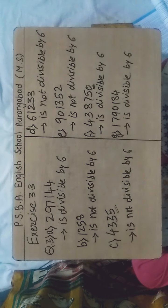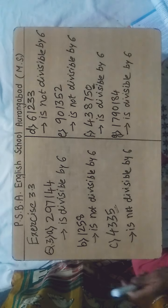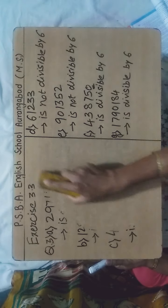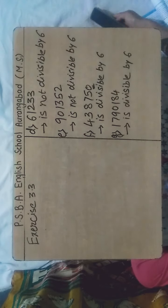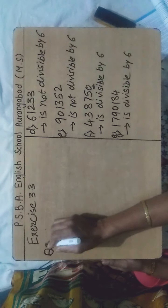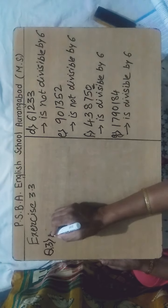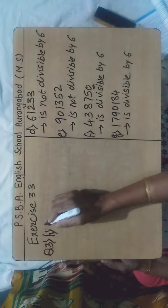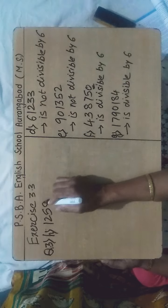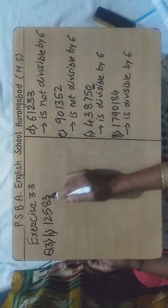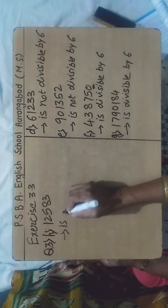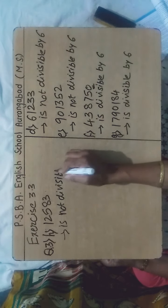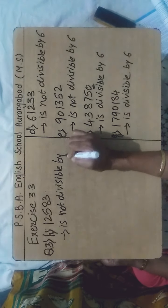Up to G we have finished. Now H, I, and J I will solve here. Sub-question H: the number given to us is 12,583. It is having 3 at its ones place, so it is not divisible by 2. Therefore the above number is not divisible by 6.